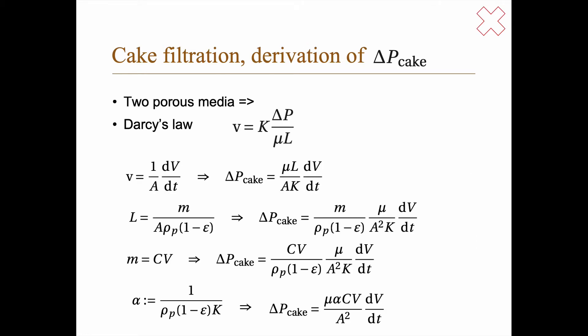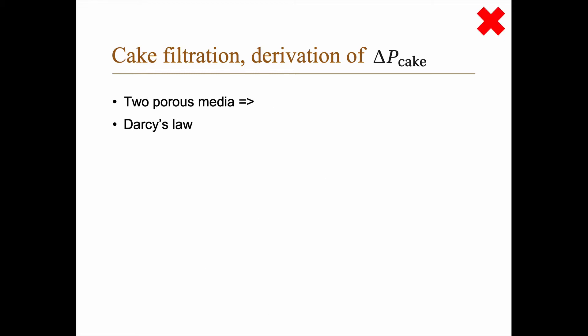You're going to use an equation for cake filtration. And let's try to derive that step by step. You have actually two porous media here. You have the filter and you have the cake. So the pressure difference is the pressure difference over the cake plus the pressure difference over the filter. And you might remember Darcy's law, v equals K times delta P divided by mu L. And the velocity is 1 divided by the area dV dt. So dV dt is the derivative of the volume that has passed through. Which means that we can write the delta P cake as mu L divided by AK dV divided by dt.